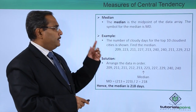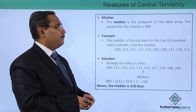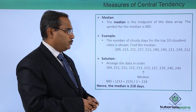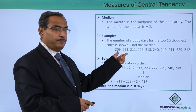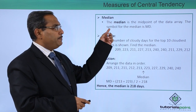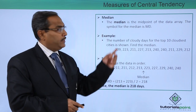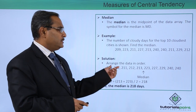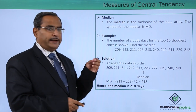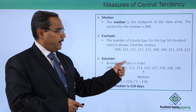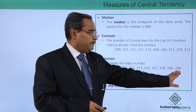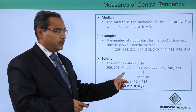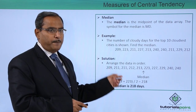Now we are going for the median calculation. The median is the midpoint of the data array, and the symbol for the median is MD. The number of cloudy days for the top 10 cloudiest cities is shown — find the median. We arrange the values; since we have 10 data points and 10 is an even number, we cannot get the single middle value. But if we had 9 values, after arranging in ascending order, the fifth value would be the median.